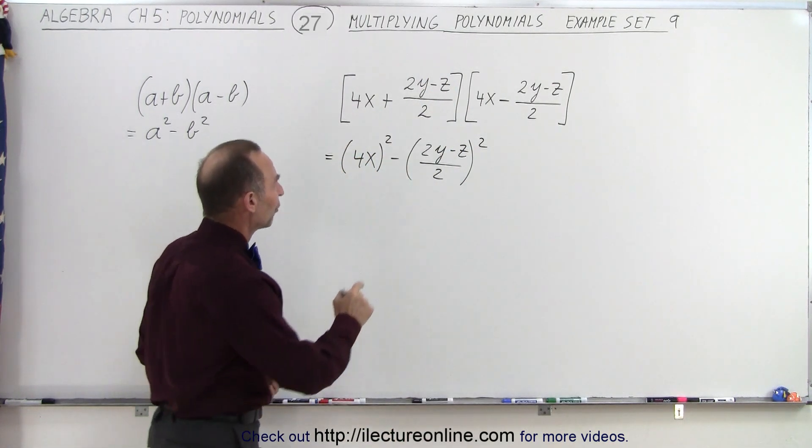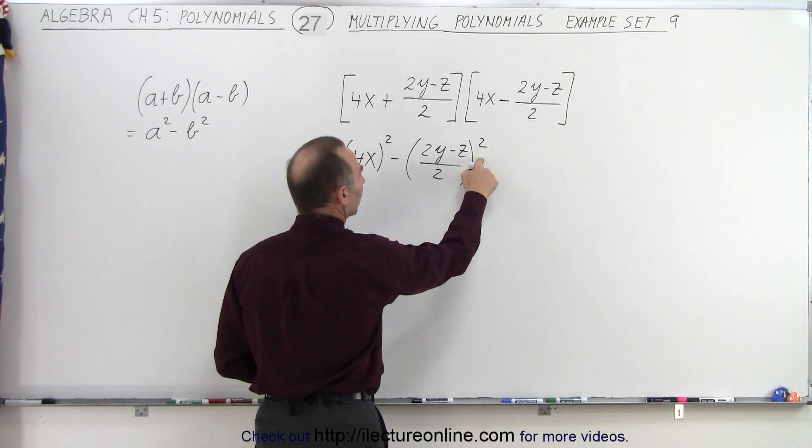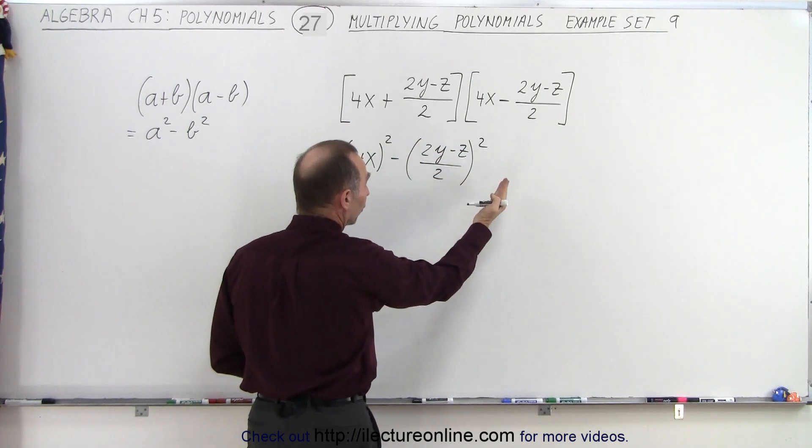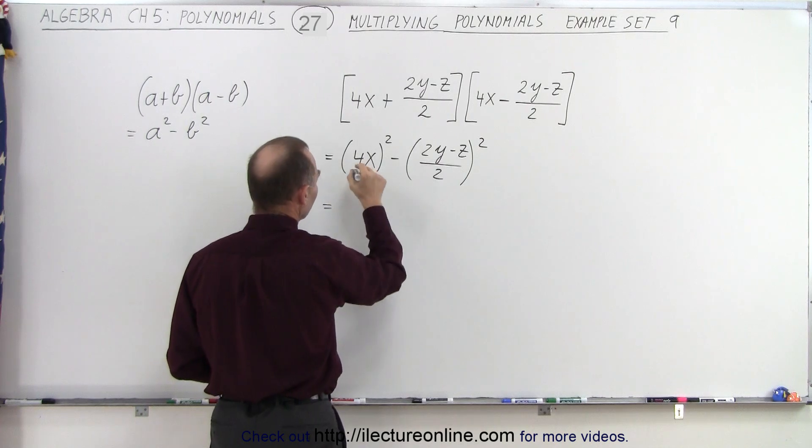And notice we have a 1 over 2 quantity squared. Well, 1 over 2 squared is 1 over 4. We can factor that out. So this can be written as,